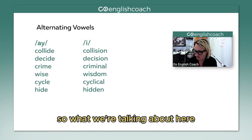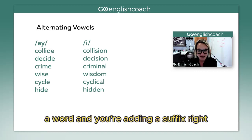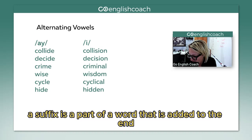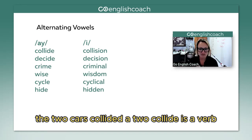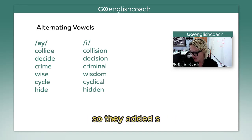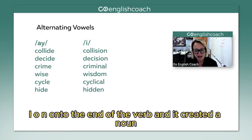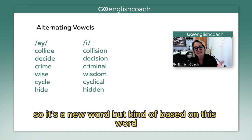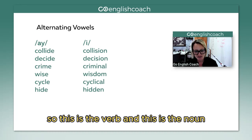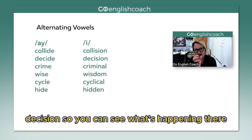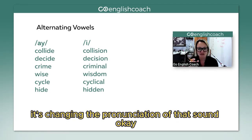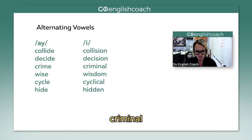What we're talking about with alternating vowels is when you take a word and add a suffix — a suffix is a part of a word added to the end. For example, 'collide' is a verb: the two cars collided. But 'collision' is a noun — they added '-sion' to create a new word. So: collide, collision. Decide, decision. You can see what's happening — adding another syllable changes the pronunciation of that sound. Crime, criminal.